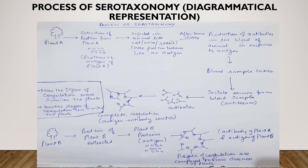These antibodies are allowed to react with the original protein from plant A, also known as the antigen from plant A. An antigen-antibody reaction takes place and complete coagulation occurs. Now if we want to see the similarity or dissimilarity of plant A with another plant, say plant B, the antibodies produced from plant A are allowed to react with the protein extracted from plant B, and we check the degree of coagulation. By the degree of coagulation we determine the closeness of plant A to plant B — more coagulation means more similar plants, and less coagulation means less similar plants.